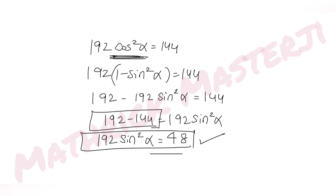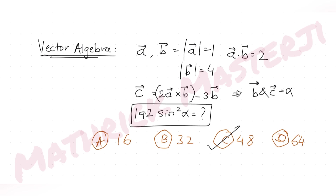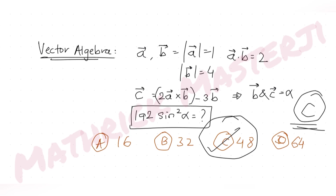Therefore, 192sin²α = 192 − 144 = 48. The answer matches option C. I hope you've understood how to solve this type of vector question. We'll continue our JEE Mains series tomorrow with another question from a different topic. Please like, subscribe, and share the channel with friends preparing for JEE. Thank you!